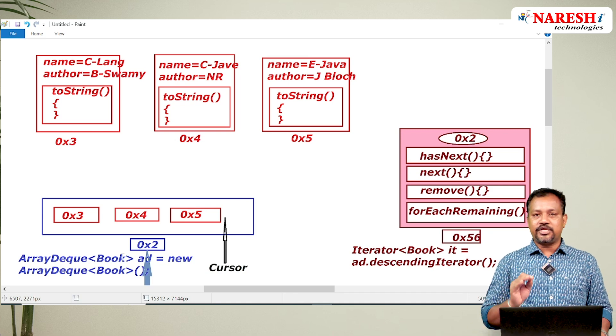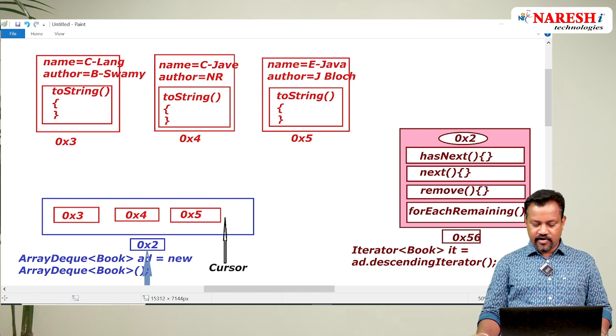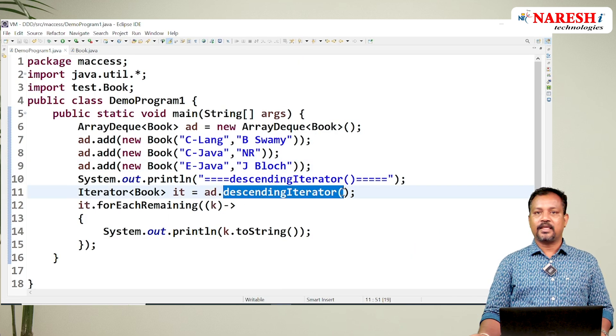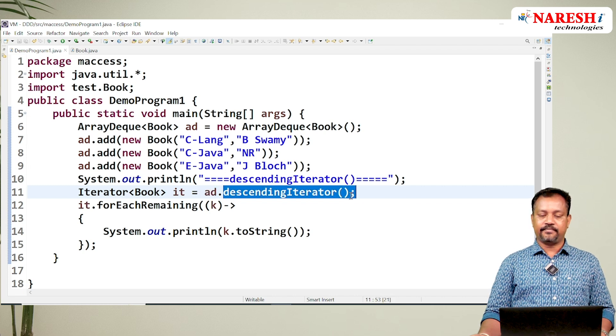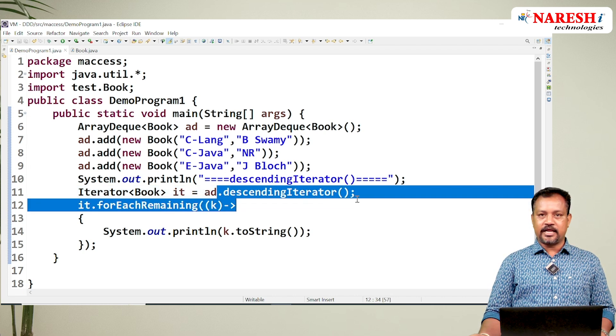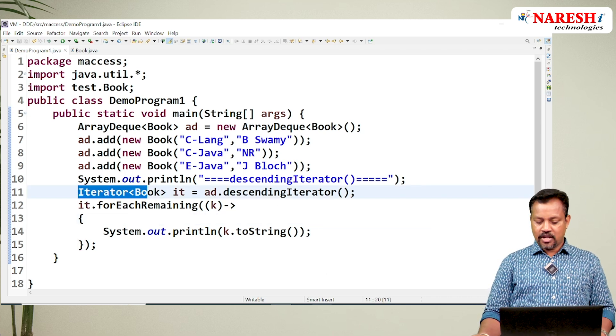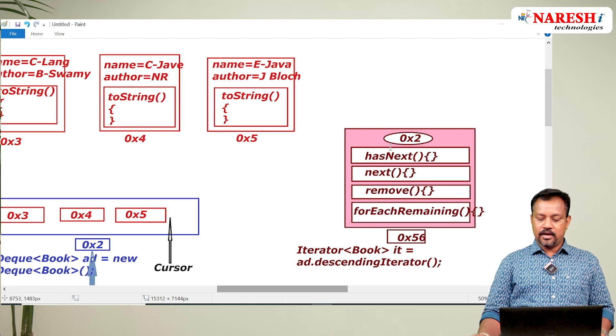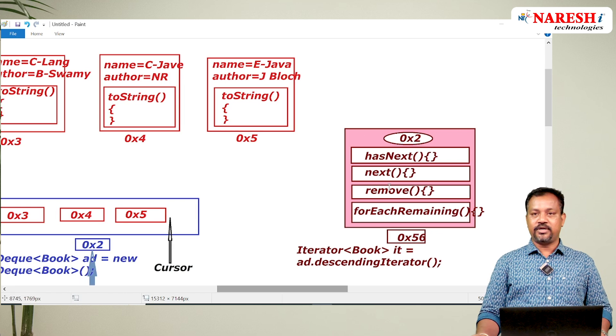I want to display this book details from this ArrayDeque object. For that, I am using descending iterator method. Whenever I say ArrayDeque.descendingIterator method, this descending iterator method will create implementation for Iterator. While creating implementation for Iterator, this iterator object is going to hold reference of ArrayDeque object.